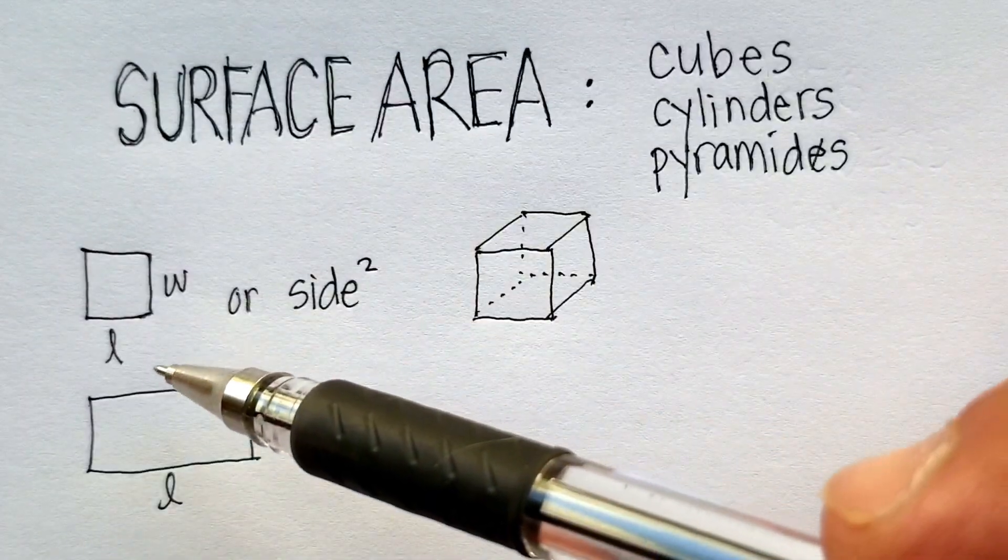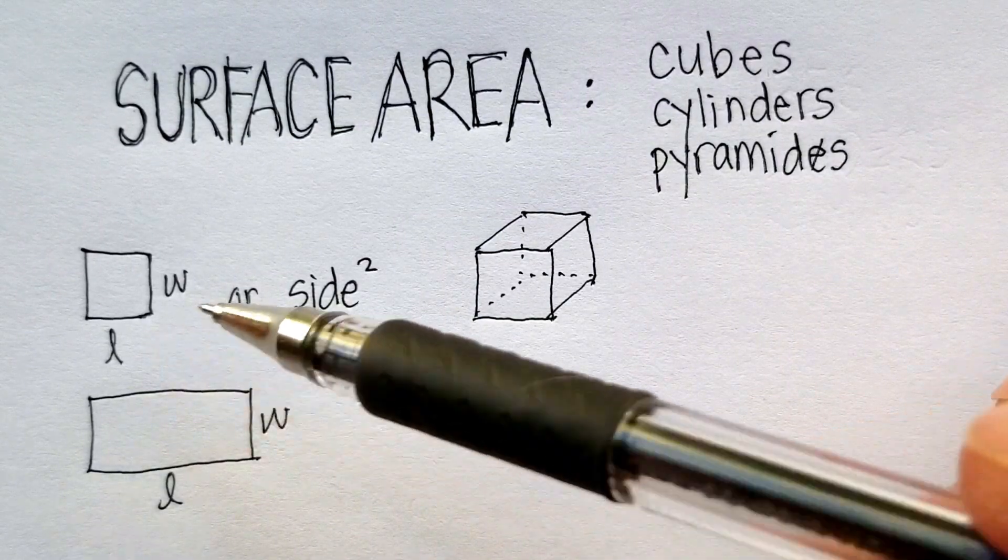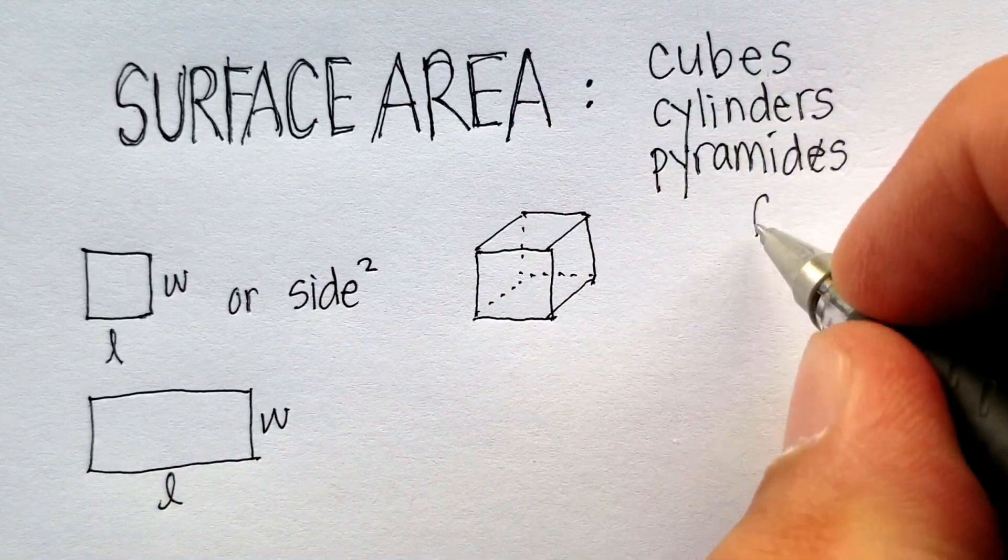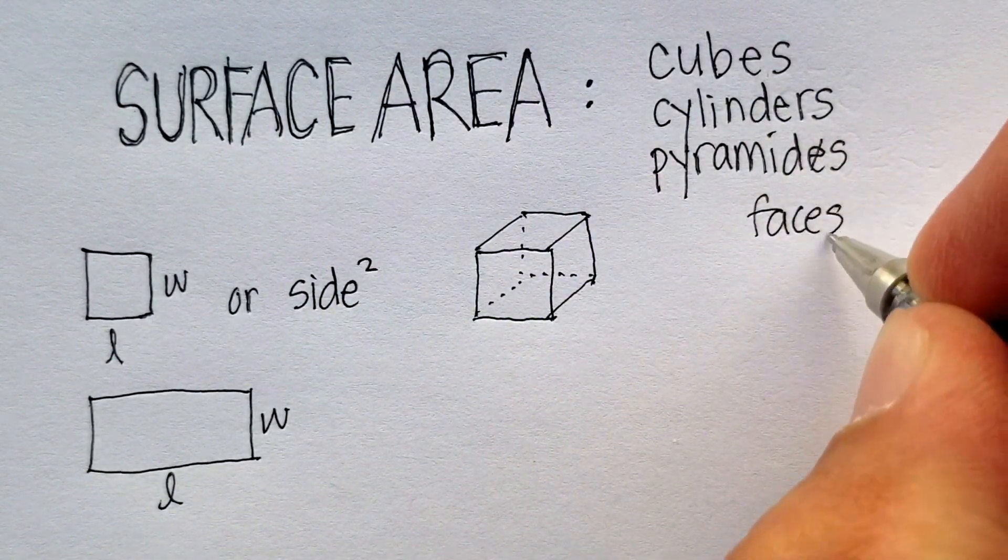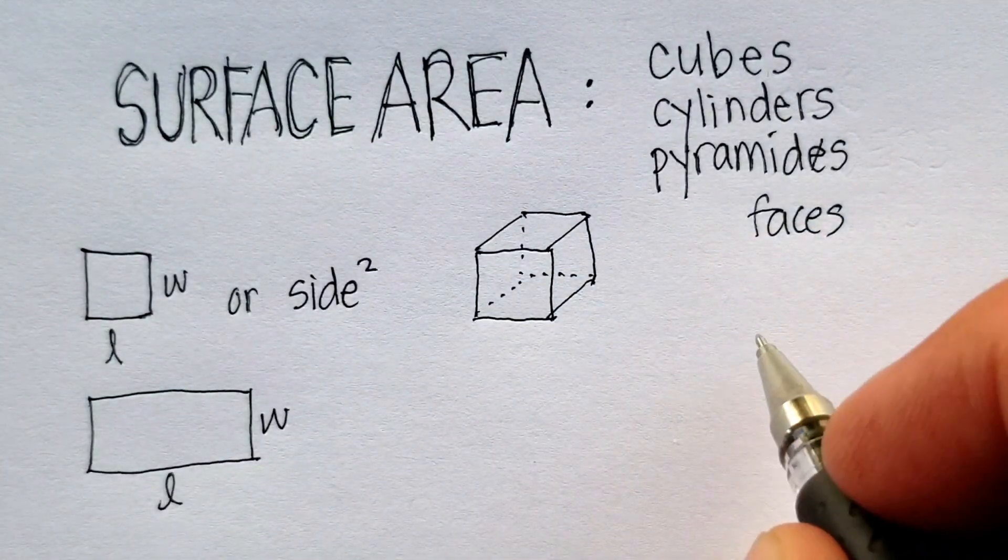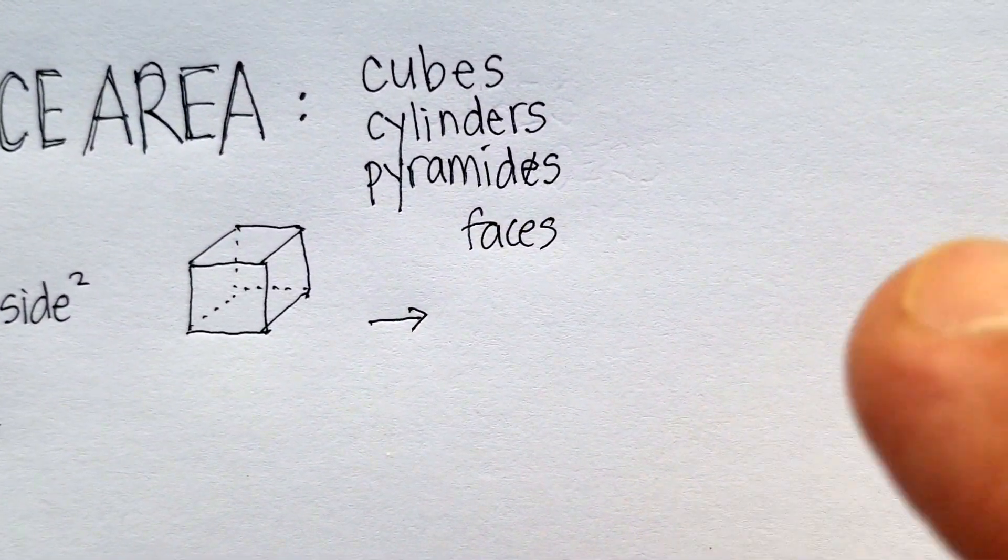To figure out the surface area of a cube, you would use the simpler formula, which is side squared, but you would multiply it by the number of faces that are in this particular cube. If you were to take this cube apart, it would basically look something like this.